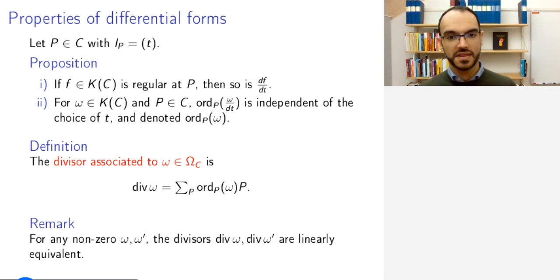One point is that the divisors of ω and ω', they are linearly equivalent. Meaning that ω and ω', through their divisors, define one and the same class in the Picard group, in the divisor class group. Why is that? Well, since they are both non-zero, you can pause and think why that is.